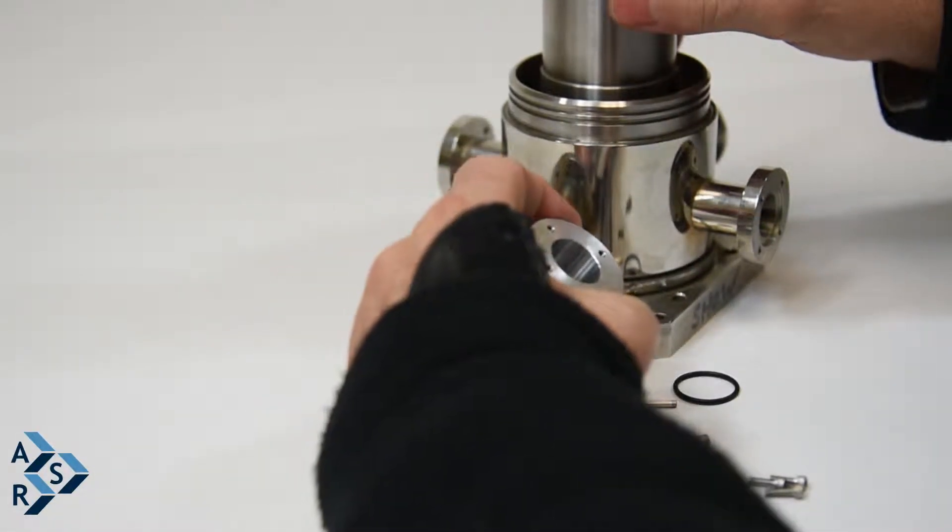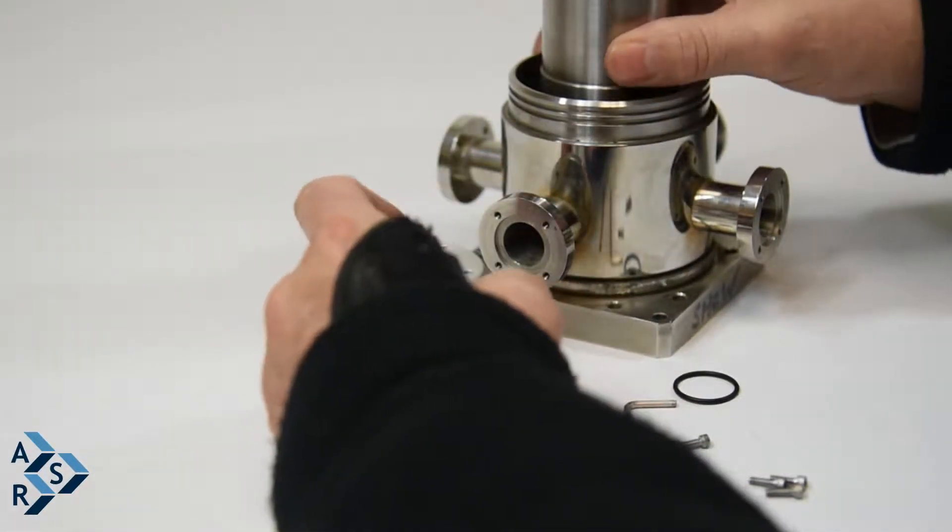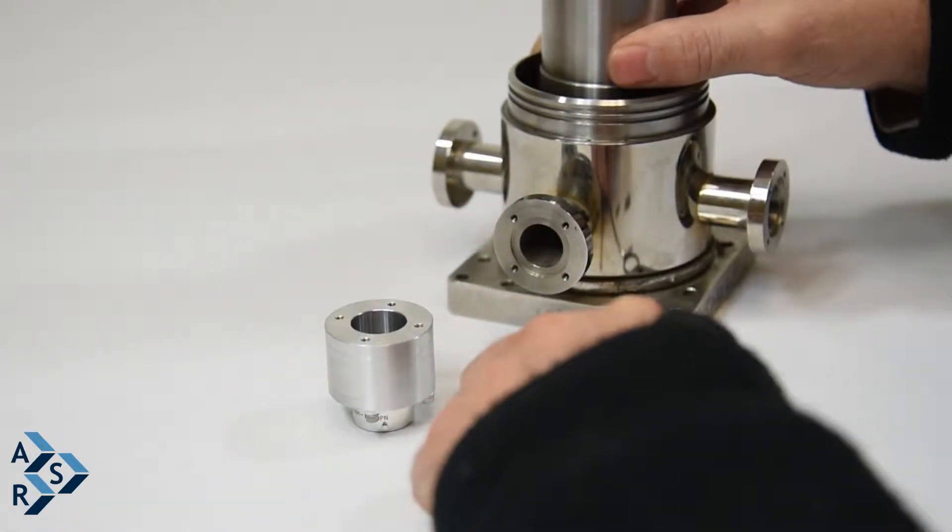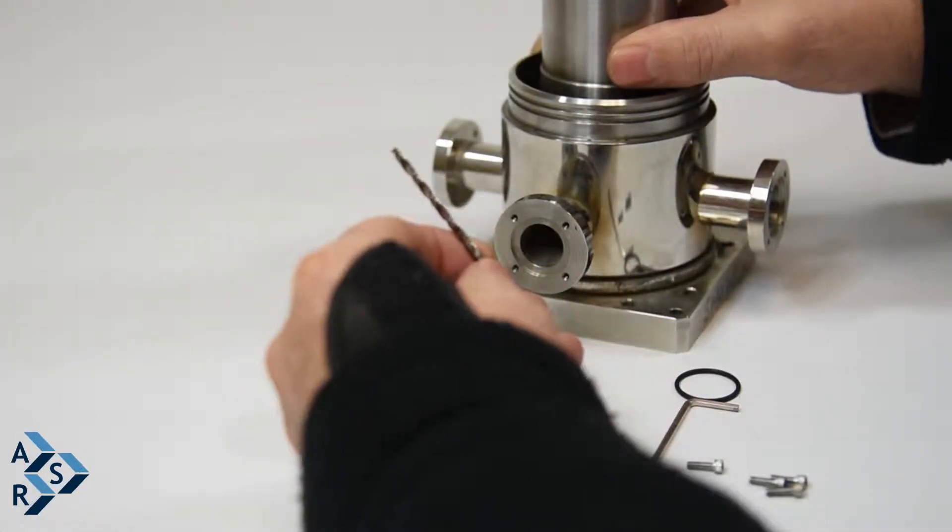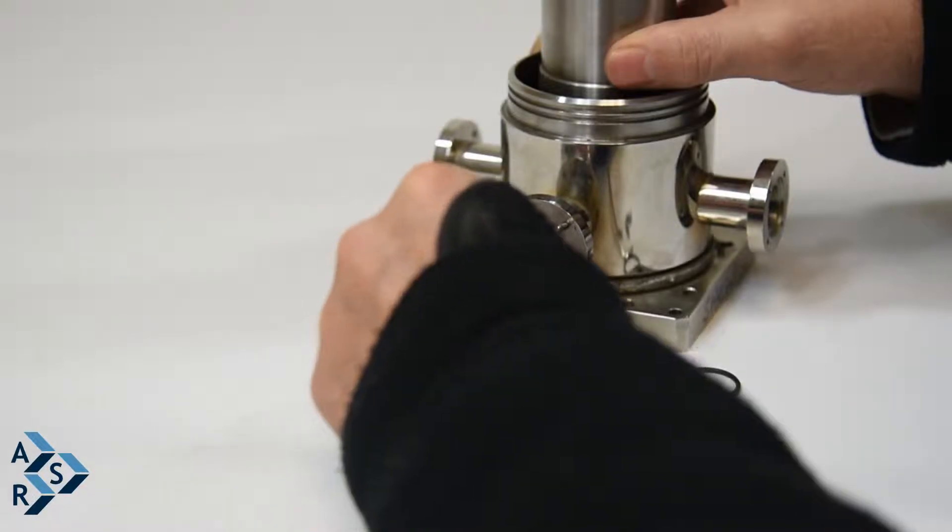You have to drill. These holes are already threaded. So what you got to do is take an eighth inch drill bit and drill these holes out.